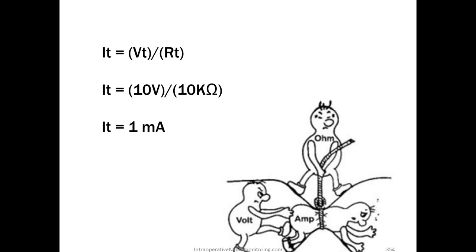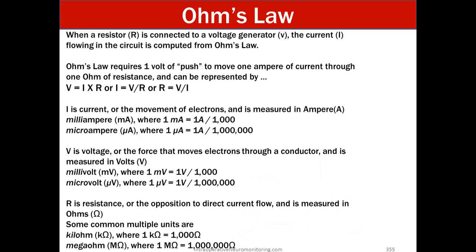Ohm's law explained a little bit further. When a resistor R is connected to the voltage generator V, the current I flowing in the circuit is computed from Ohm's law. Ohm's law requires one volt of push to move one amper of current through one ohm of resistance and can be represented by the Ohm's law equation. I is current or the movement of electrons and is measured in amperes. So milliamp is one milliamp is equal to one amp over a thousand or micro is one over a million. Voltage or the force that moves electrons through a conductor is measured in volts and we use millivolts and microvolts very common. So just make sure that you're able to move through the milli and microvolts and milliseconds and microseconds and all that and kilo ohms and ohms.